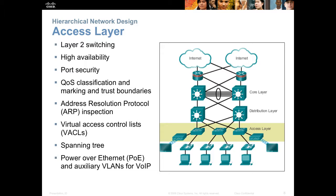The access layer is typically layer two. Sometimes we do port security, things like sticky bit. We might do quality of service tagging where we identify voice calls or video conferences at the port level where they're coming into the network. We have a lot of broadcasts such as address resolution protocol. We might apply some limited access control lists using VACLs, which are application-specific or MAC address-based access control lists that can be implemented at layer two. We would have spanning tree because layer two suffers from possible loops, so when we're building redundant cabling we'll need to use spanning tree. Also a feature unique to the access layer is Power over Ethernet, used primarily for wireless access points and voice over IP phones.